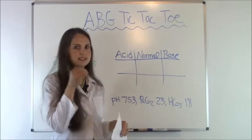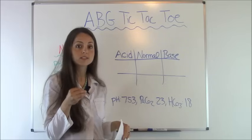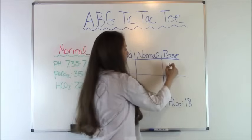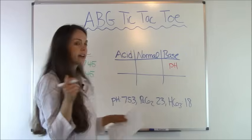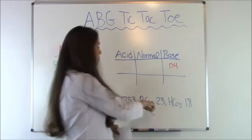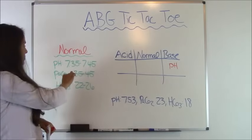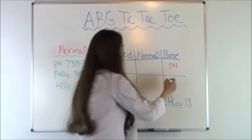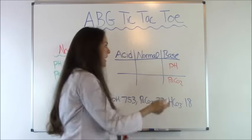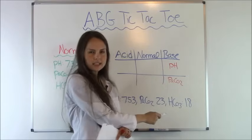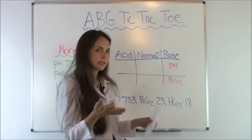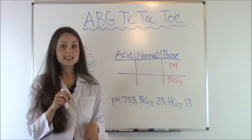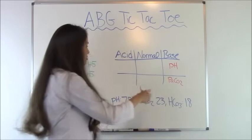For our pH of 7.53, since it's over 7.45, it is a base — alkalotic — so pH goes under base. Our PaCO2 is 23, and remember it's the opposite: normal is 35 to 45, so 23 is basic. PaCO2 goes under base as well, and they are lining up. We still need to look at HCO3, which is 18. The normal is 22 to 26, so since it's 18, it's an acid — so HCO3 goes under acid.